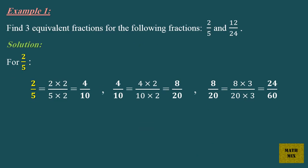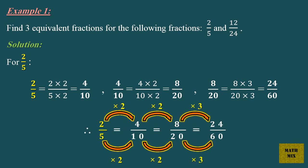Example 1: Find three equivalent fractions for 2 over 5 and 12 over 24. Solution: For 2 over 5 — 2 over 5 equals 4 over 10, which equals 8 over 20, which equals 24 over 60. Therefore 2 over 5 equals 4 over 10 equals 8 over 20 equals 24 over 60.